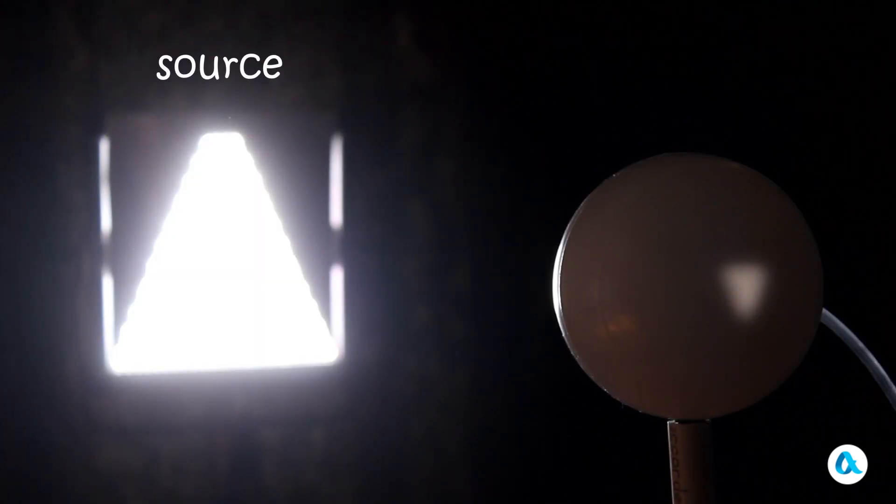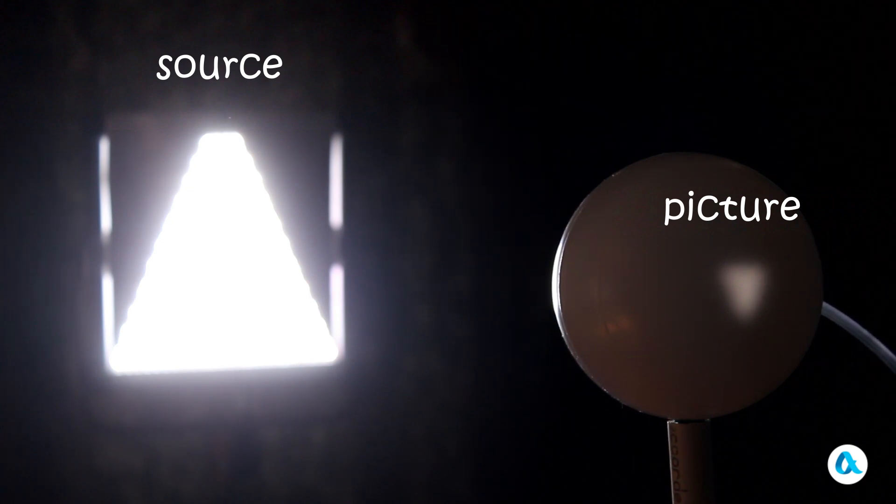And now we can start the experiments. We set up an eyeball across from the spotlight with a triangular mask. Activate the spotlight. Furthermore, on the rear wall, there materialized a rather indistinct image, because the lens was in a state of disarray.